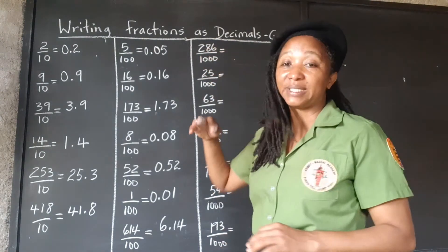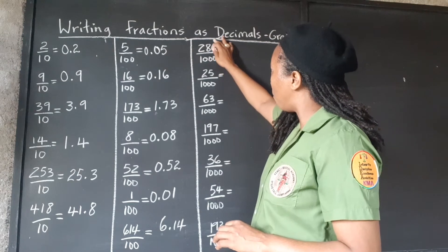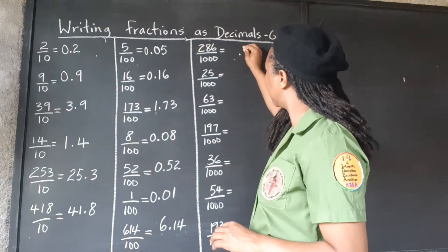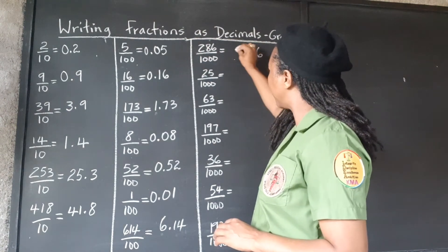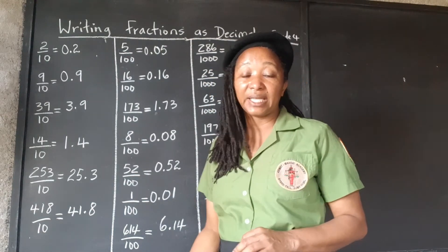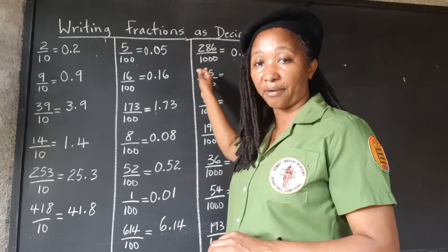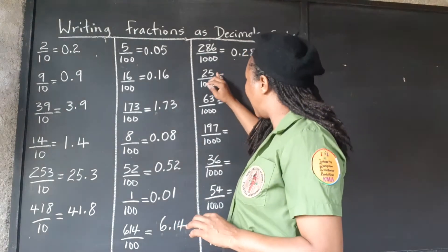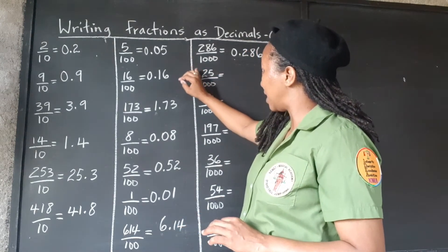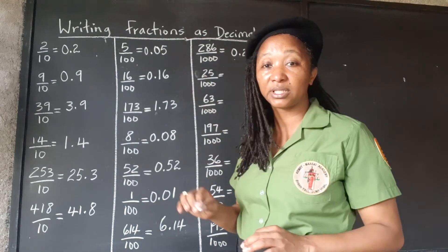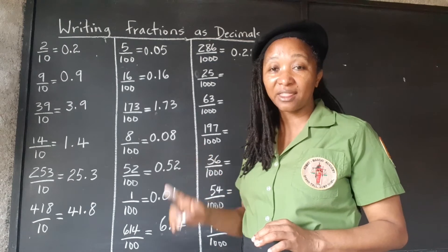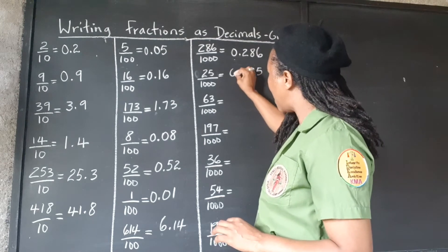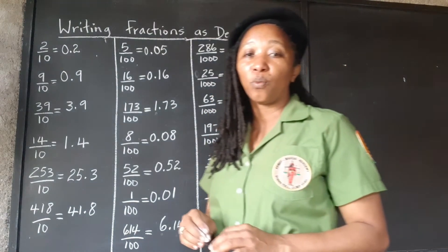For 286 thousandths, we move three places — one, two, three — taking us right in front of the 2, giving us 0.286. We fill in our placeholder to indicate zero is the whole number. For 25 thousandths, three places back — one, two, three — means we fill a zero in front to indicate there's nothing in the tenths place, and we fill the whole number position with zero as well.